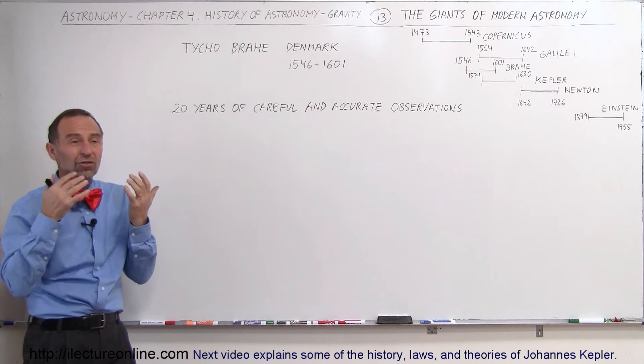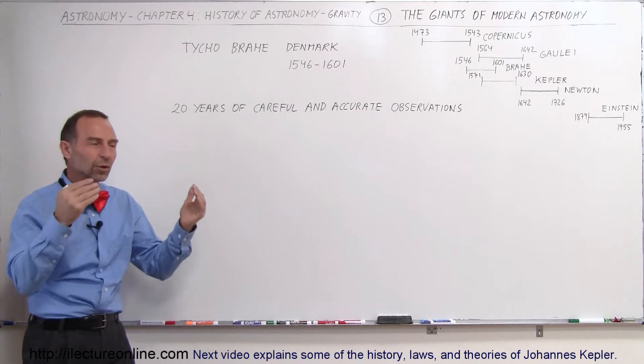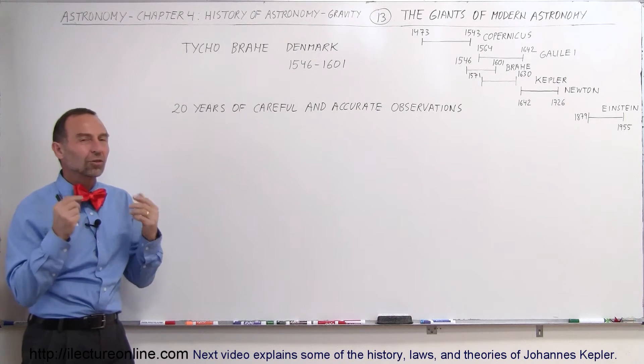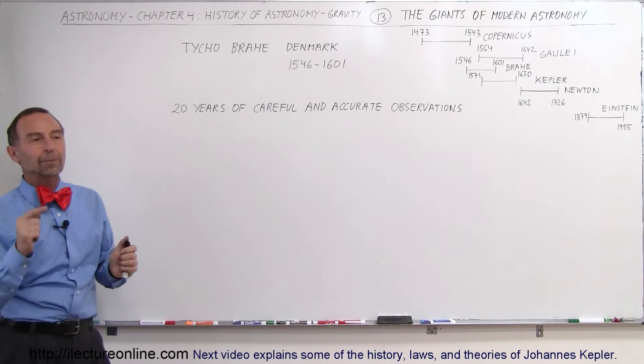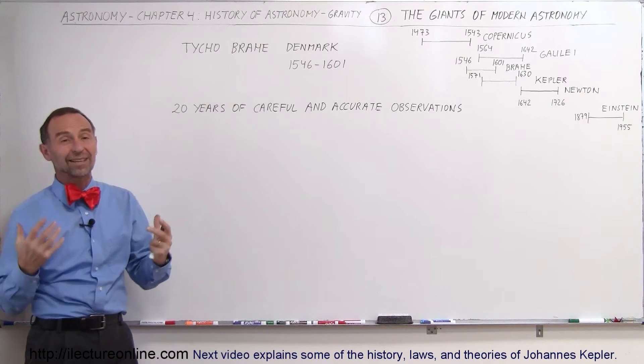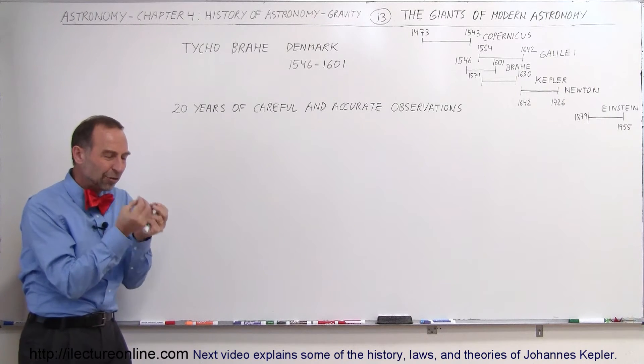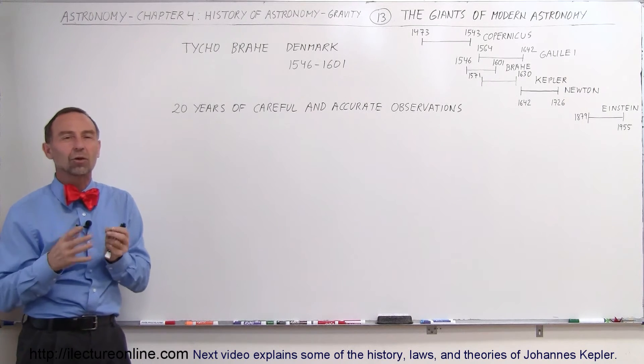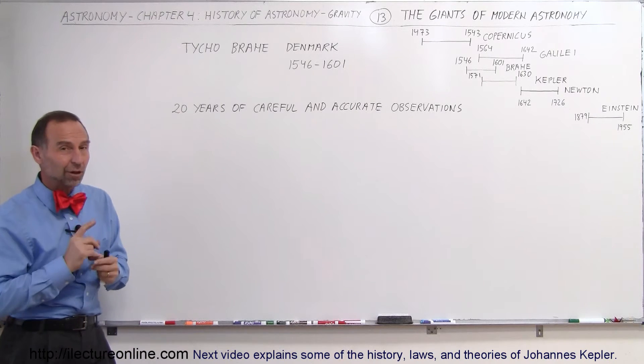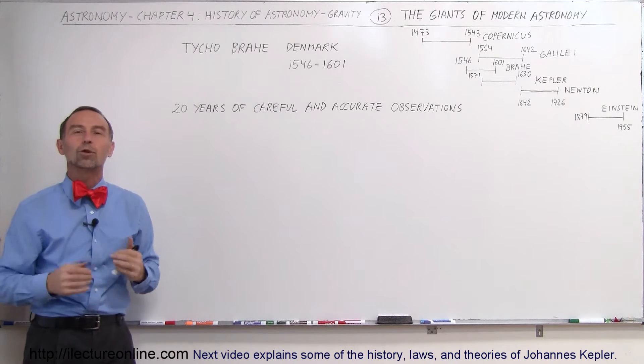Still, they couldn't understand exactly why the planets did what they did, why they were in certain positions, because the assumption always held that the planets revolved around the sun in circular motion. Now, of course, we know that's not the case, but it was assumed back then that the orbits were circular and the observations just didn't seem to match. And so he figured, if I make very careful observations over many years, he will be able to figure out that mystery of the orbits of the planets.